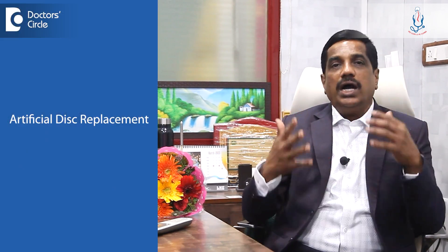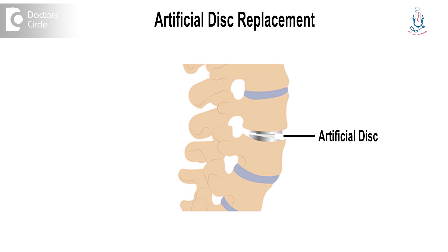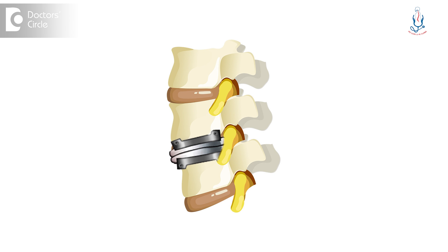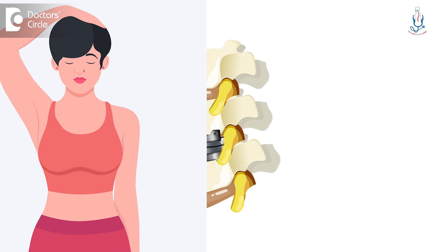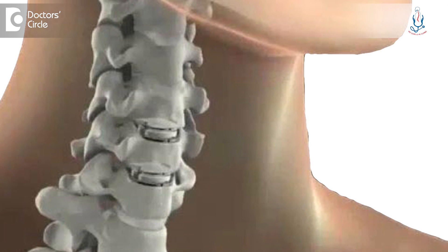To prevent that, nowadays we do artificial disc replacement. These discs give support to the spine. Wherever we remove the disc, we can place this. They bridge that space without losing movement. They can do bending movements almost equal to that of a normal disc. In cervical disc especially, this has become a good surgery.